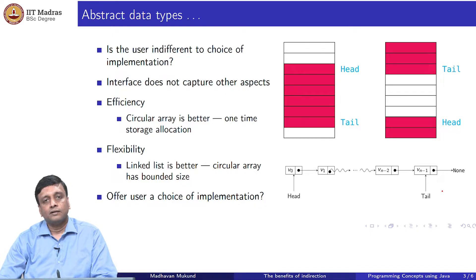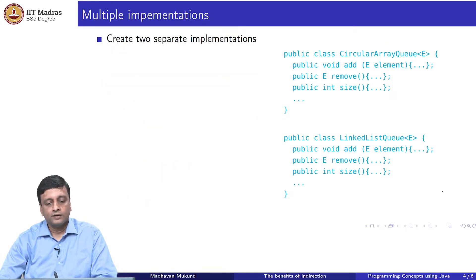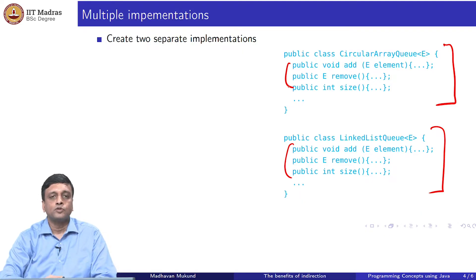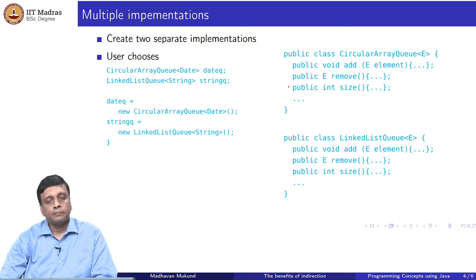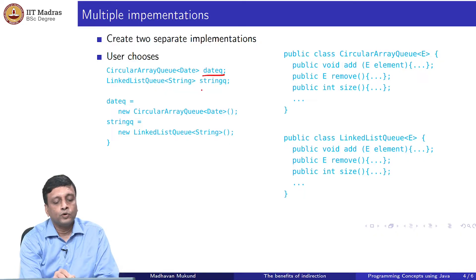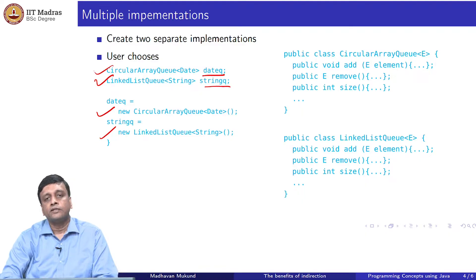To get around this, we might tell the user that there are two different implementations and you choose. We can create two separate classes instead of having that one class queue, which had a hidden implementation, which the user had no control over. Now, we provide the user with two implementations. If you want a circular array queue, you pick up this one. If you want a linked list queue, you pick up this one. The interface is the same. These three functions are the same. As far as using it, there is no problem. But it is a question of the other aspects, efficiency and flexibility and so on. The user might choose, for instance, to have a queue of dates using a circular array queue, and a queue of strings using a linked list queue. When you create it, you then define it, you declare it up here, and then you instantiate it. Similarly, you declare it up here and you instantiate it. This is one solution to this problem of providing different implementations with different features. We allow the user to choose the implementation that they prefer.